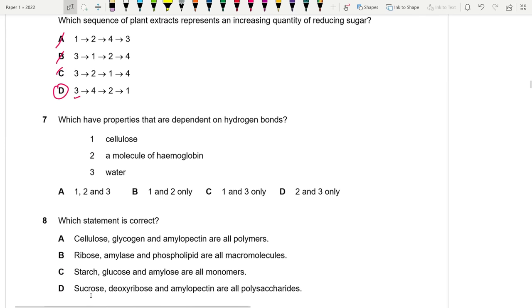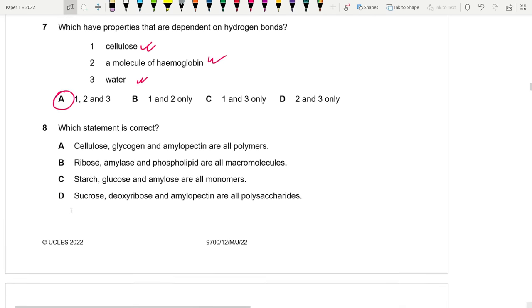Which properties are dependent on hydrogen bonding? Cellulose, this is correct. Water, this is also true. Hemoglobin is a protein. So yes, this is also true. Seven is A. Which statement is correct? This is also similar to variant 1.1. Cellulose, glycogen, and amylopectin are all polymers. These are all polysaccharides. They are polymers. Amylopectin and amylose make up starch, but it's a polysaccharide itself. Cellulose is made up of beta-glucose and the others are made up of alpha-glucose. Why are the other ones wrong? Starch is not a monomer. Sucrose is not a polysaccharide. Ribose is just a monosaccharide. So it's wrong.